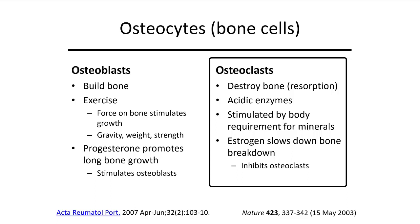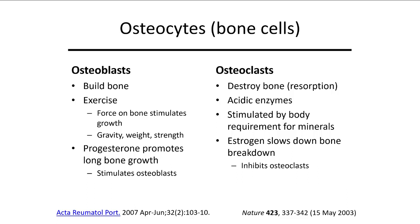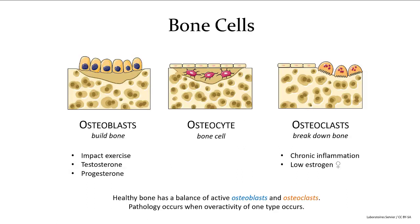Estrogen slows down bone breakdown, but for menopausal women, estrogen only stops the breakdown — it does not build bone. You need progesterone for that. In summary: osteoblasts build bone, stimulated by exercise, testosterone, and progesterone. Osteoclasts break bone down, promoted by chronic inflammation, low estrogen, or poor nutrition.